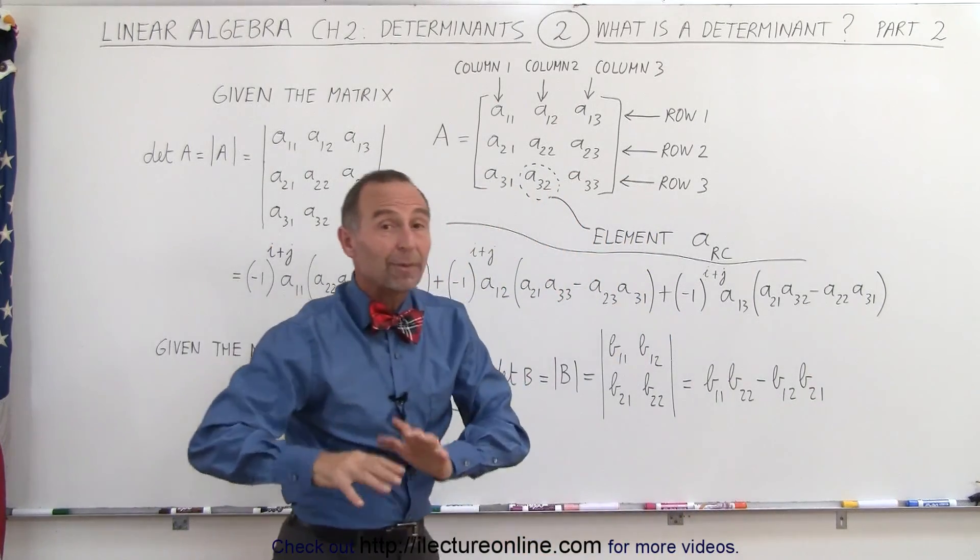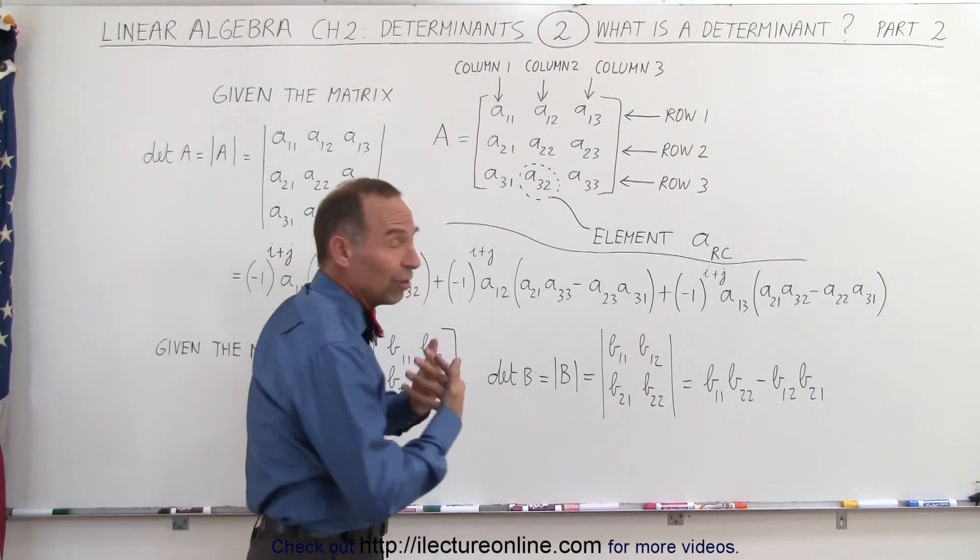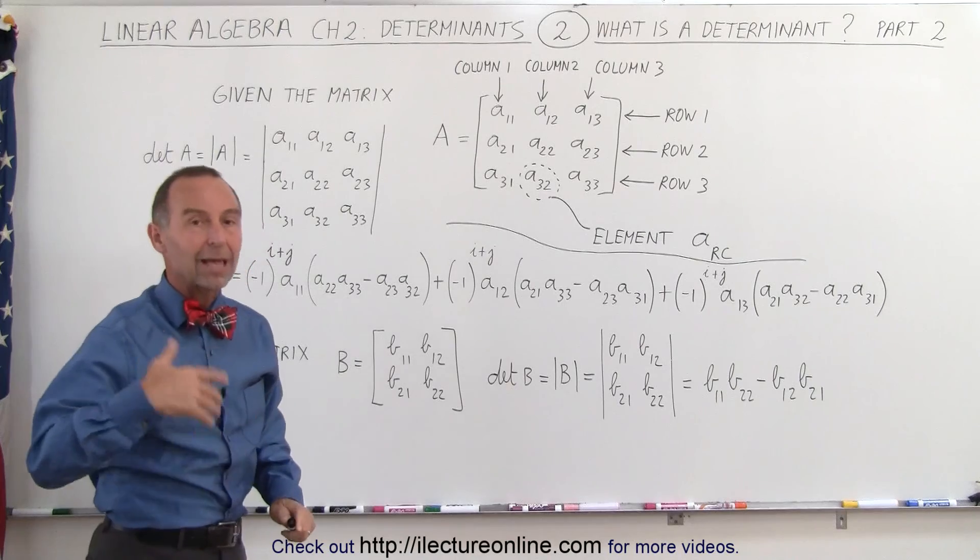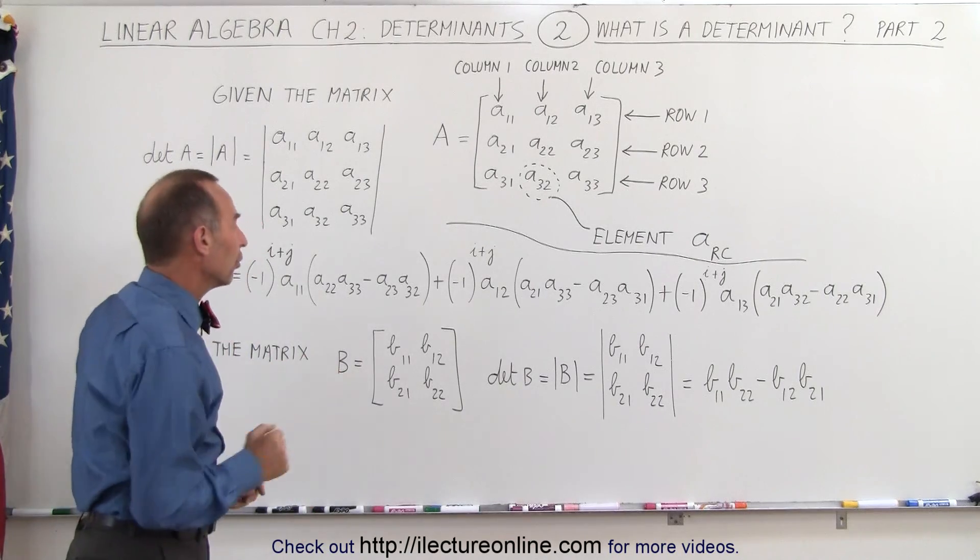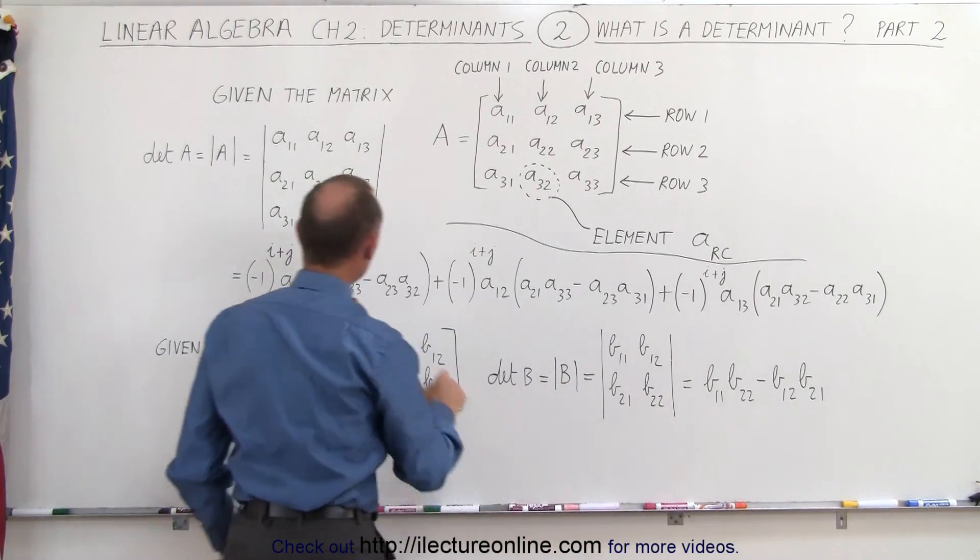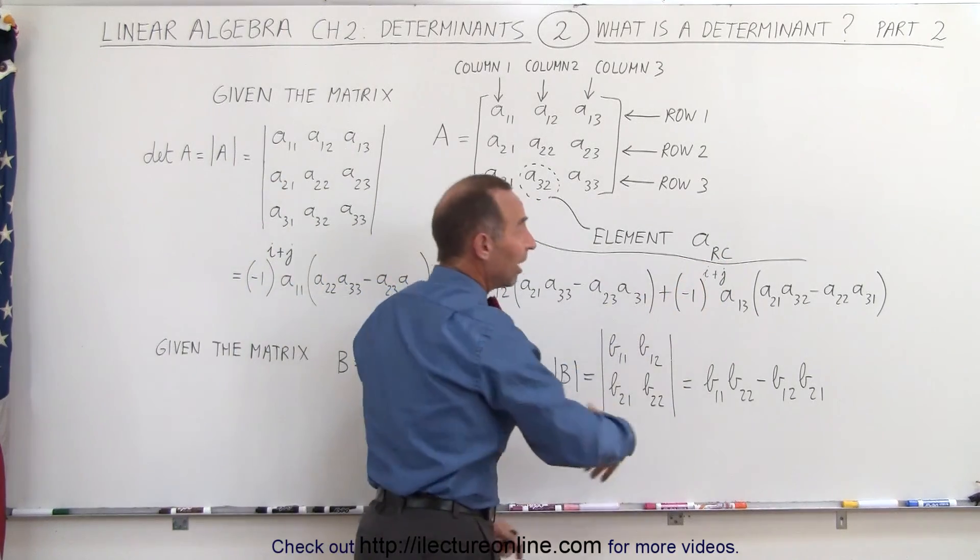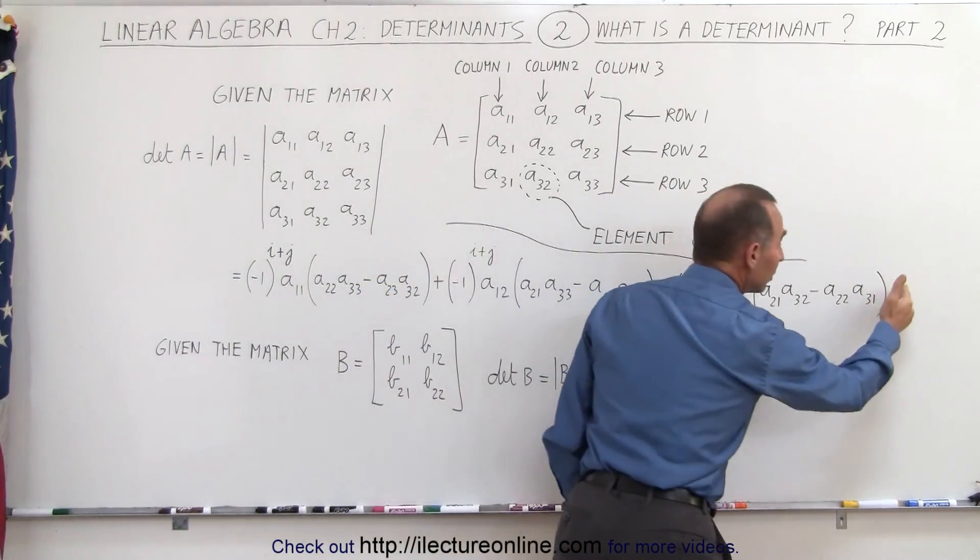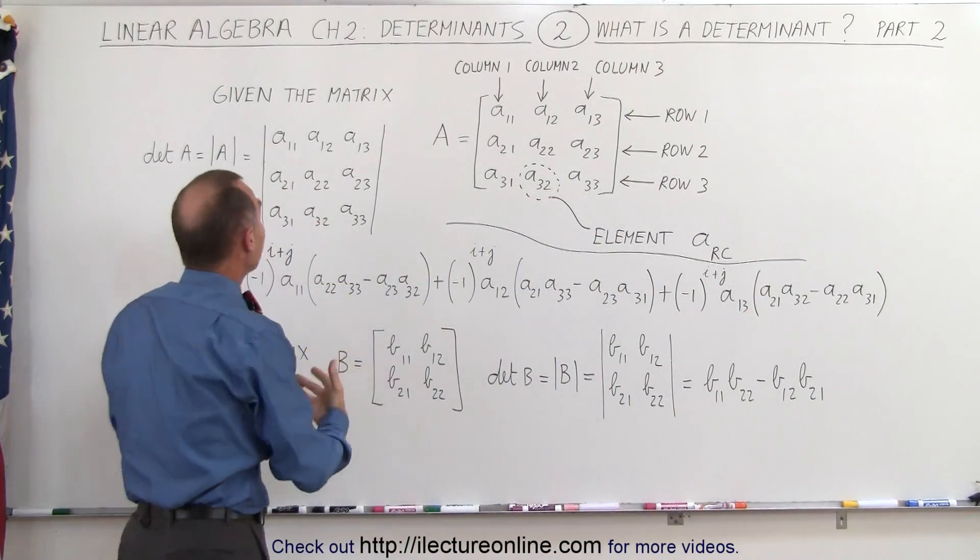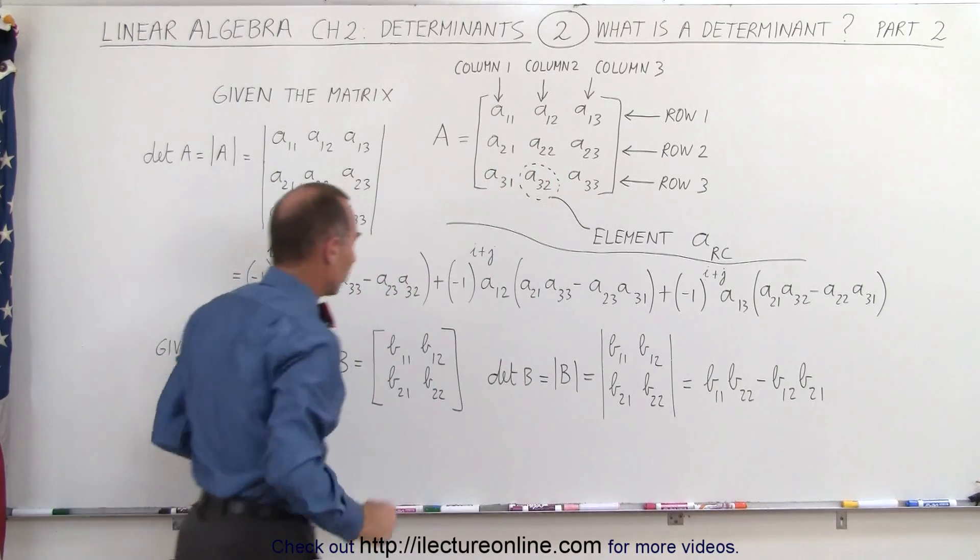Later on, we'll show you some examples of how to do that. Here, I simply want to show you the definition of what a determinant is, and we'll worry about actually how to implement that in some later videos. But anyway, that's how you would calculate the determinant. All these would simply be numbers, and this would give you a single number, a single constant, so to speak, which would then be the determinant of your matrix.